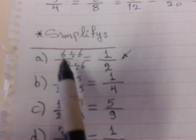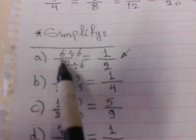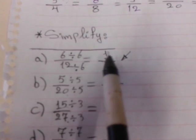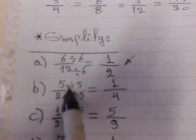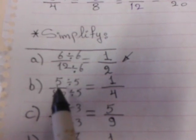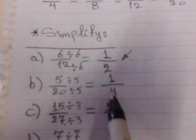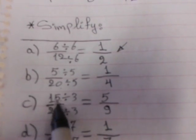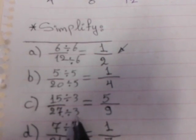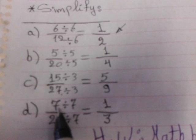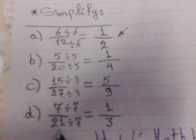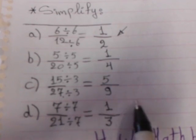We have another question: simplify. For 6 over 12, which times table contains both 6 and 12? Table of 6. So 6 divide 6 equals 1, and 12 divide 6 equals 2. For 5 over 20, table of 5: 5 divide 5 equals 1, and 20 divide 5 equals 4. For 15 over 27, table of 3: 15 divide 3 equals 5, and 27 divide 3 equals 9. For 7 over 21, table of 7: 7 divide 7 equals 1, and 21 divide 7 equals 3, which is 1 third.